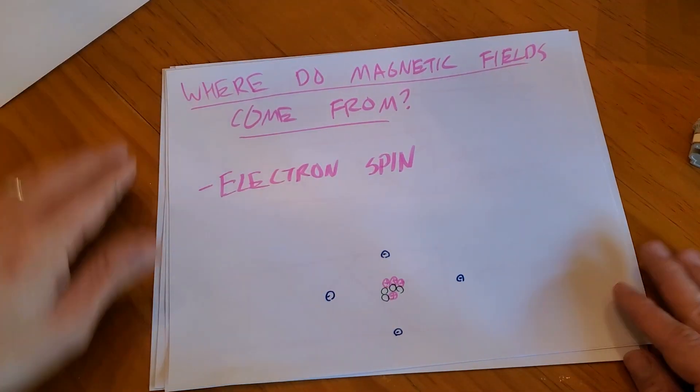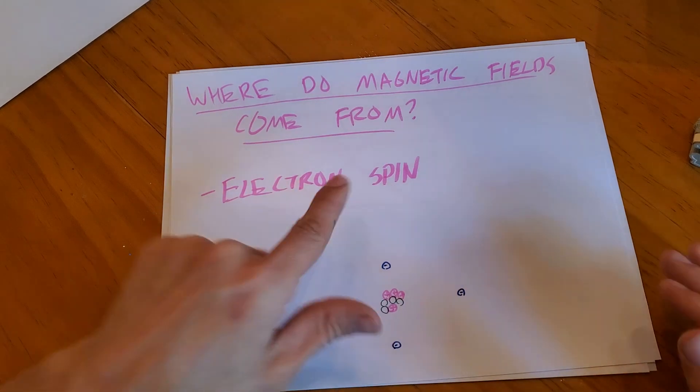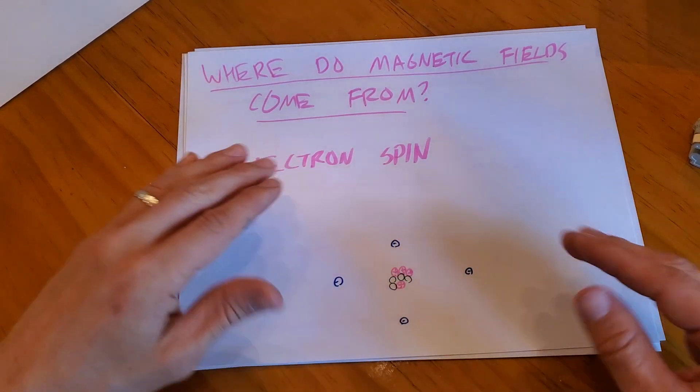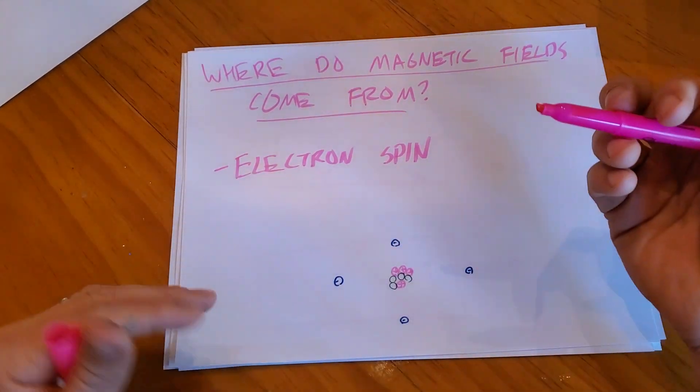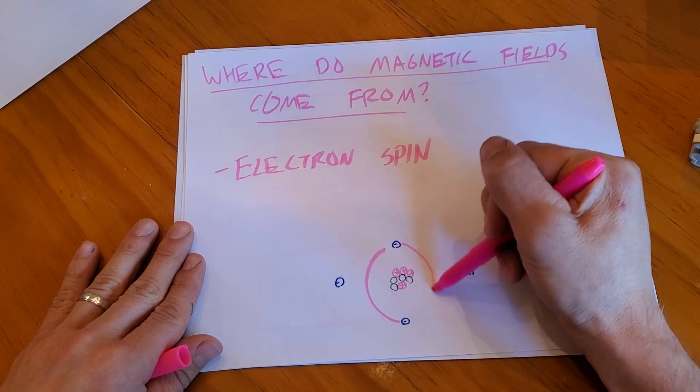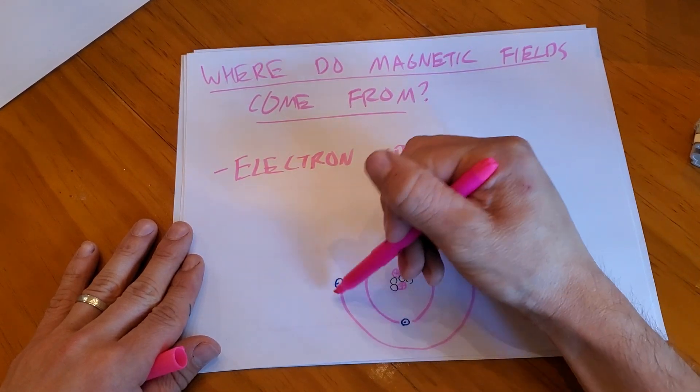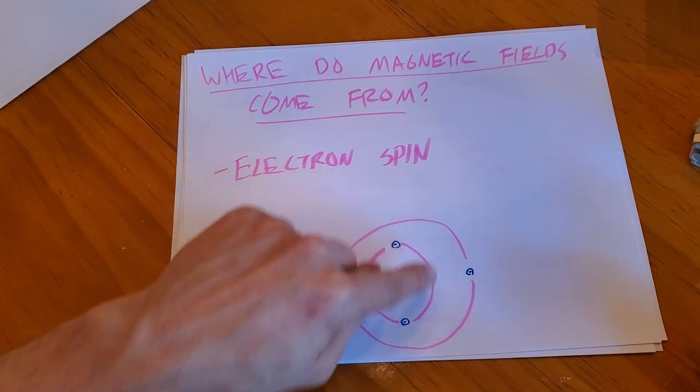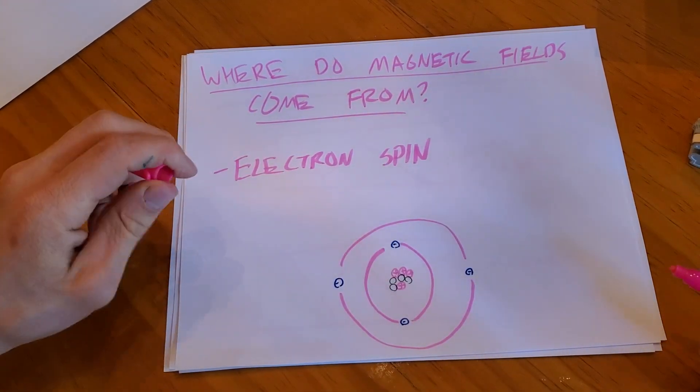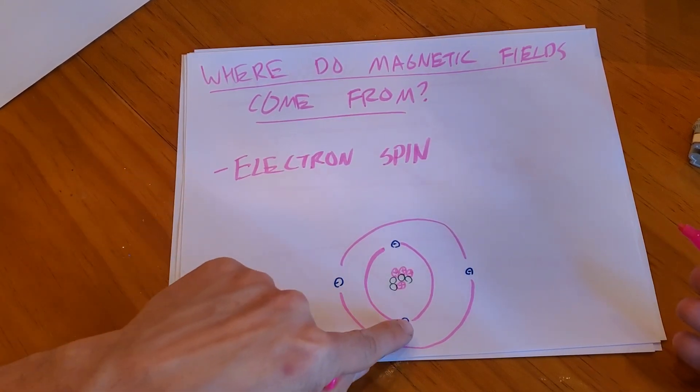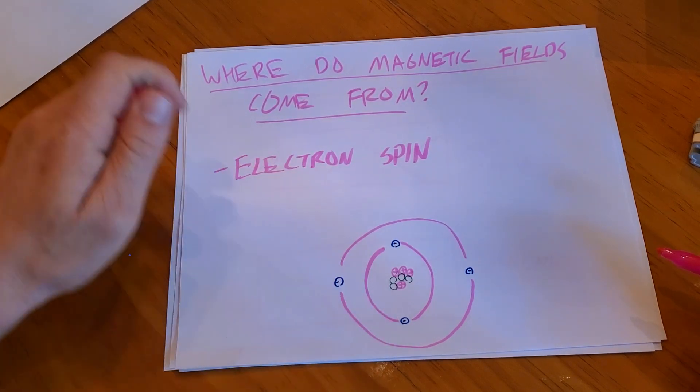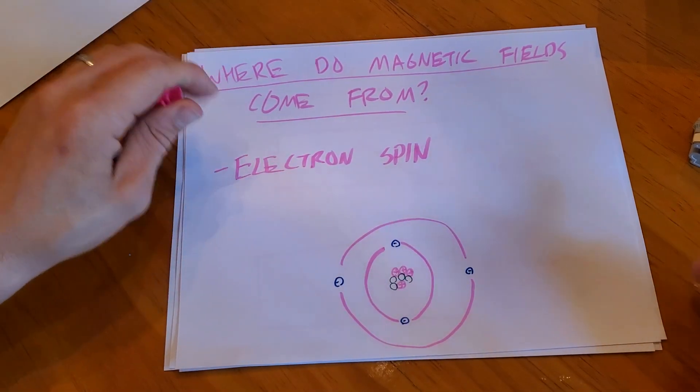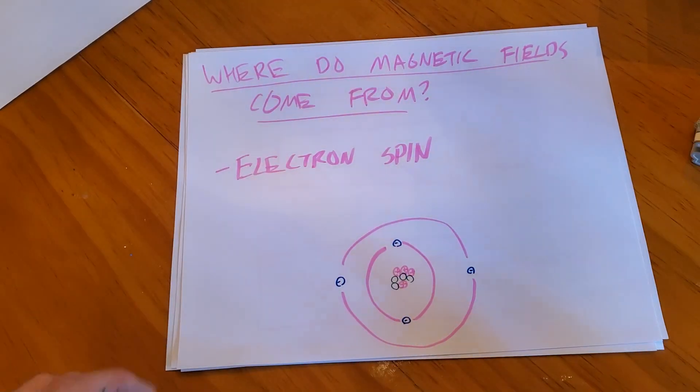So where do magnetic fields come from? It's all due to electron spin. Going back to chemistry, we have our atom with our nucleus with protons and neutrons and then we have our electrons orbiting the nucleus. Our first shell has two and then our outside shell has more than two. This is a really simple atom. This isn't super accurate. These electrons don't just spin in these circles. They spin all over the place. In chemistry, it's more of a probability field. It's like a cloud of this electron being almost at all places at once because they're so small and they're so fast.